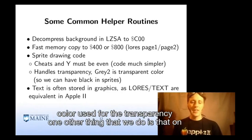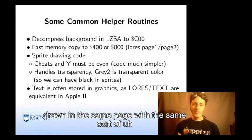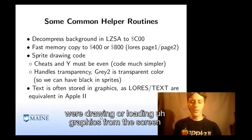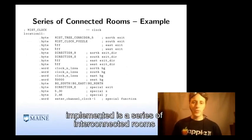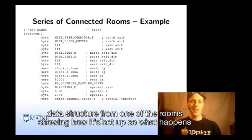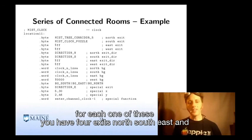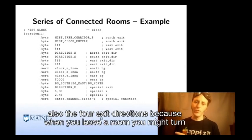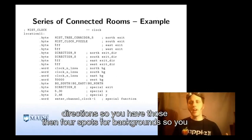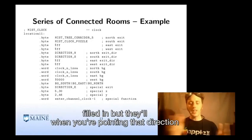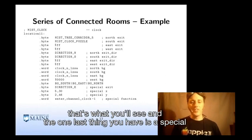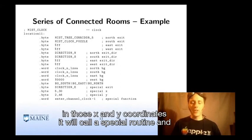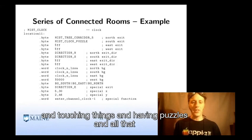One other thing: on the Apple II, text and low-res graphics are drawn in the same page with the same code, so in many cases we treat text drawing just as if we were drawing graphics from the screen. The game is implemented as a series of interconnected rooms. Each room has four exits — north, south, east, and west — pointing to the next room in each direction, plus four exit directions since when you leave a room you might be turned in different directions. There are four spots for background images, one for each direction you can face. And there's a special exit: X and Y coordinates on screen where, if you touch the cursor there, it calls a special routine — that's how you handle picking up things, touching things, and puzzles.